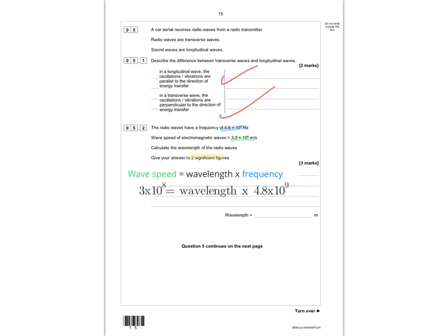Substituting the numbers in gives us the first mark. We rearrange by dividing wave speed by frequency to get wavelength. Using a calculator gives the correct answer of 6.3 × 10⁻² metres to two significant figures. If you haven't written your answer to two significant figures, you'll only get two marks for this question.